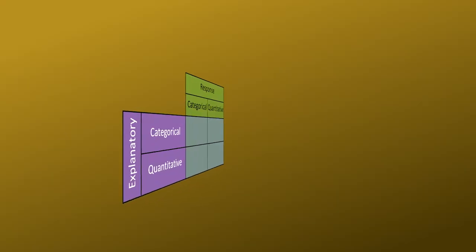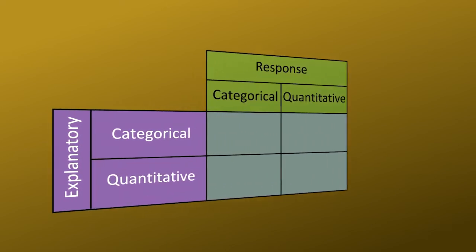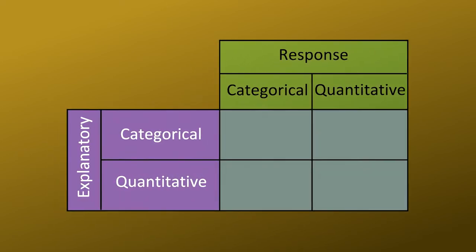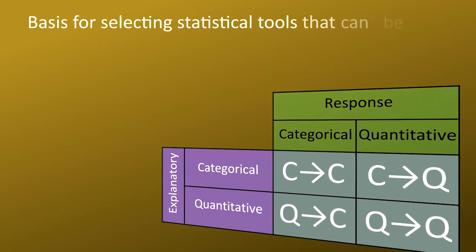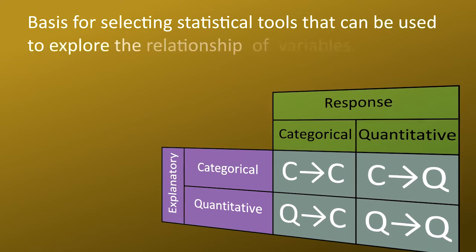Even though we won't be able to be certain that the association we're testing is causal, for the purposes of exploring our question, it remains important to determine the role that each variable will play in our model. This role-type classification can be summarized and easily visualized in this table. This classification system serves as the structure for the rest of this course.